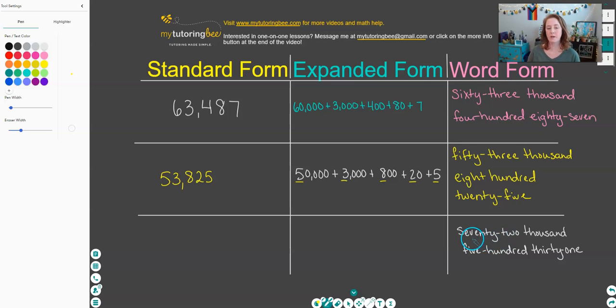And then for our last example, we are given the number in word form and we need to write it in expanded and standard form. I'm actually going to start off—just realized that I didn't make this pink. So let me make it color coded here.